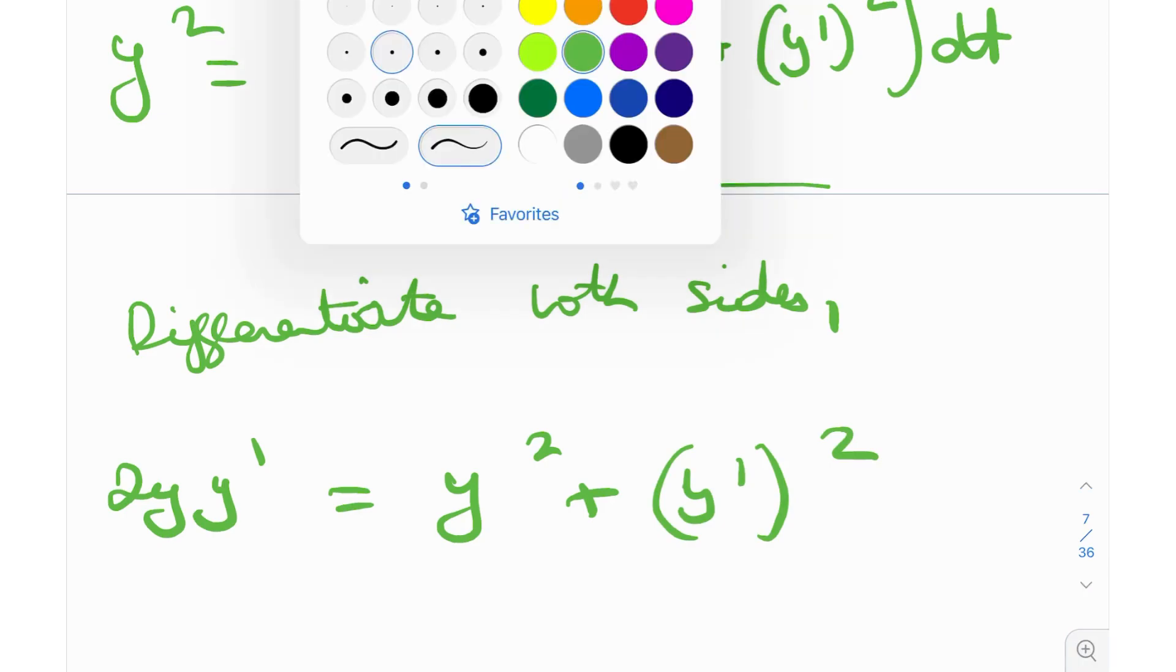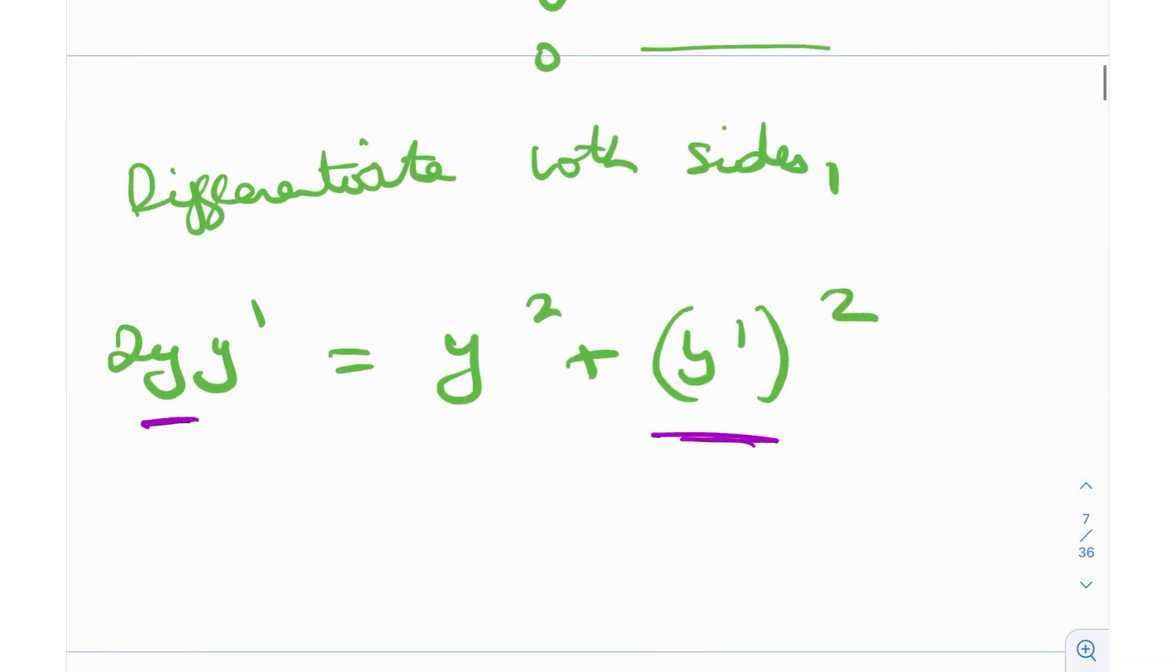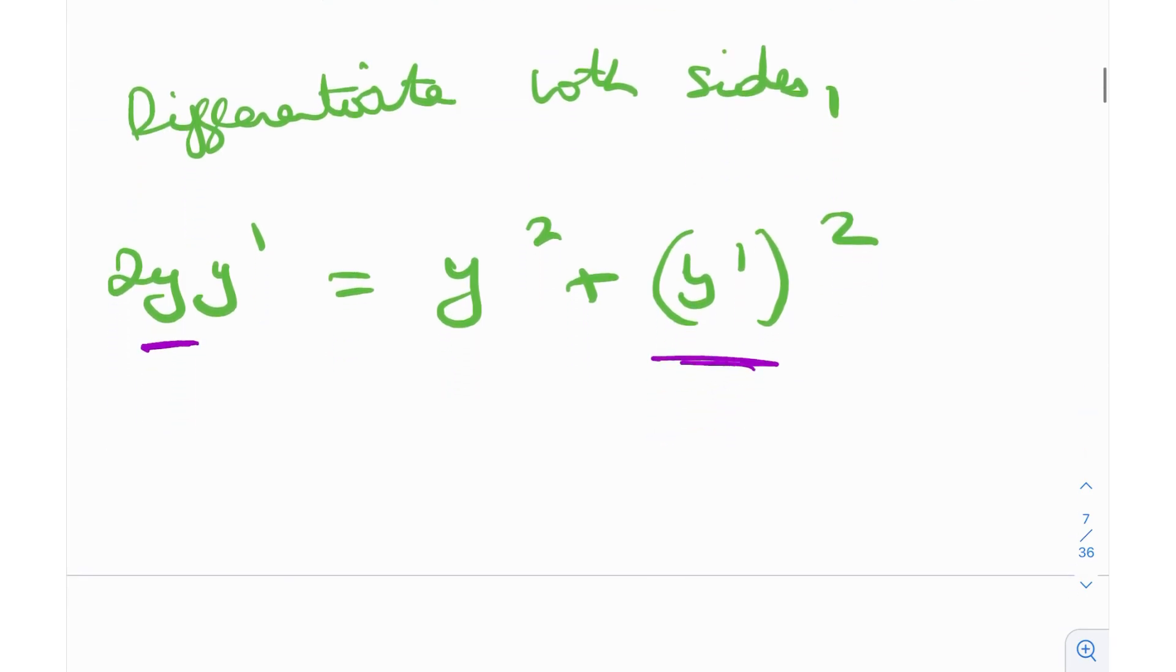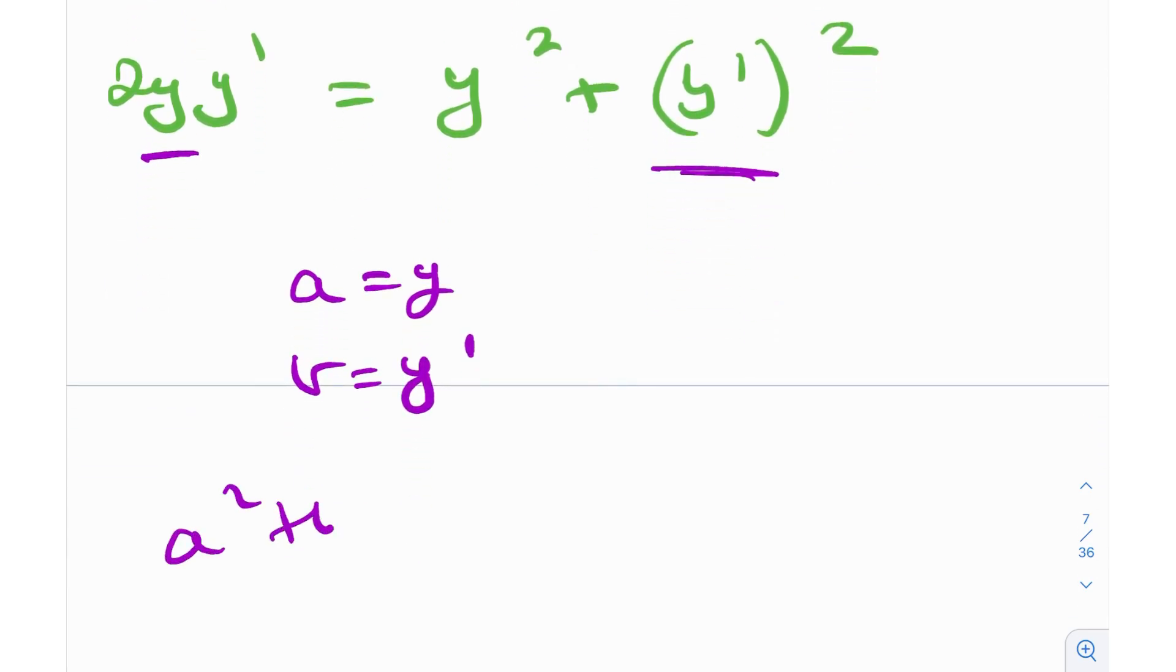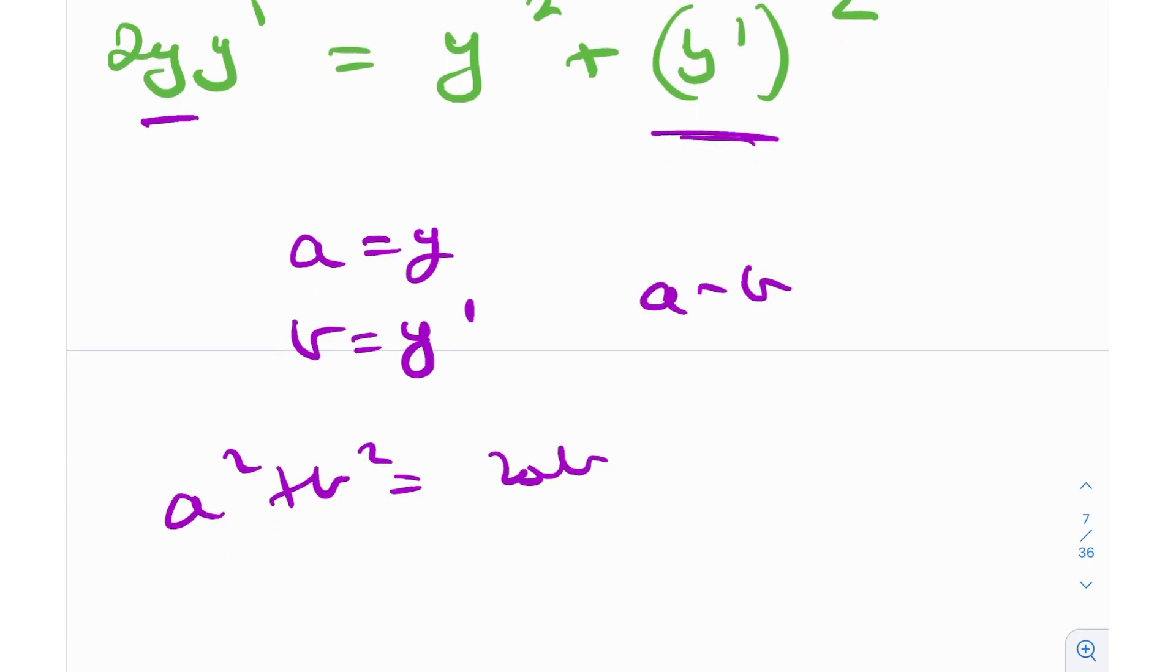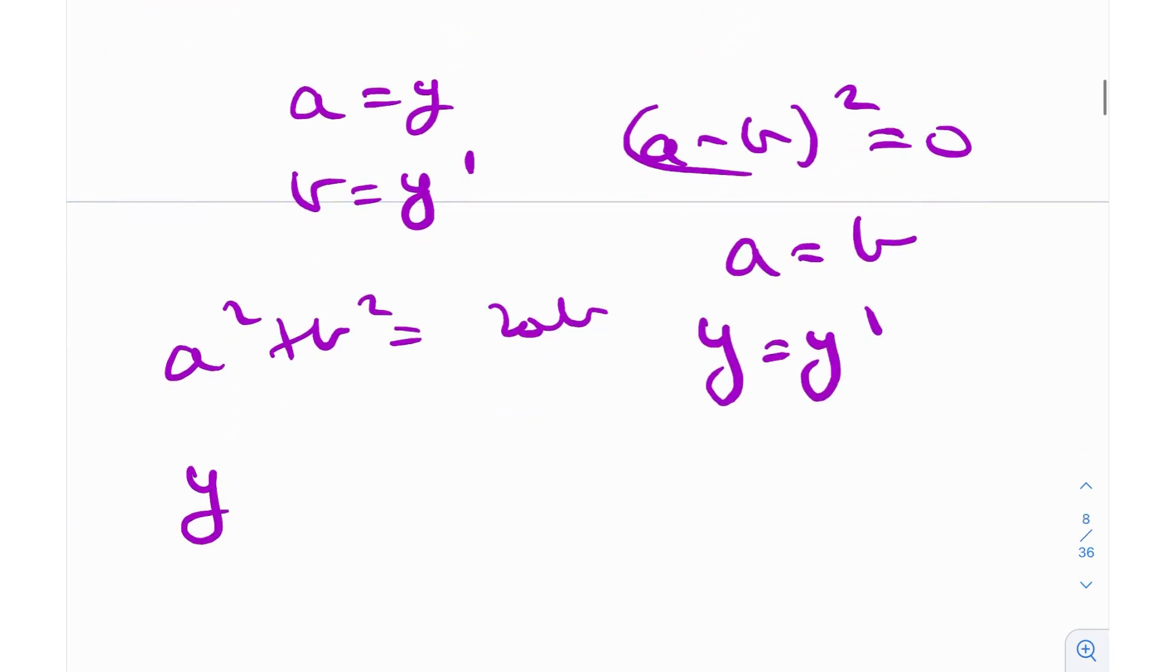Great, so now we have a non-linear differential equation in the variable y. This is actually quite easy to solve because this reminds me of something. If I let a = y and b = y', we get a² + b² = 2ab, and that's really great because this is nothing but (a - b)² = 0. So a = b, but in other words y = y'. In fact this factorizes as (y - y')² = 0, so obviously y = y'.